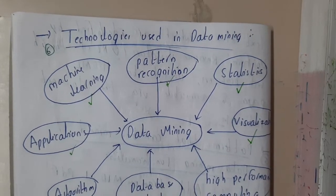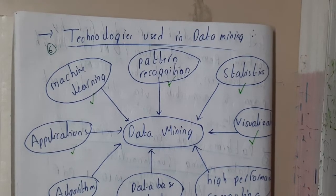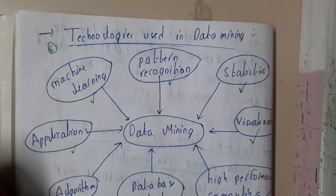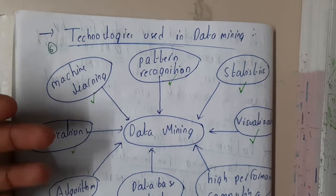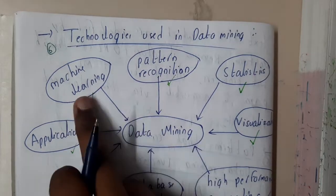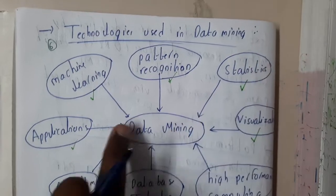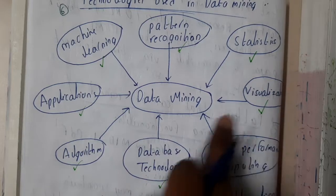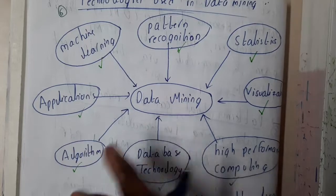Hello guys, we are back with our next lecture. In this lecture, let us go through the technologies used in data mining. Data mining cannot be used directly or solely — it is not a programming language on its own. You need to use some kind of programming language or tools. In data mining, we will be using concepts of machine learning, pattern recognition, statistics, applications, algorithms, database technologies, high-speed computing, and visualization.